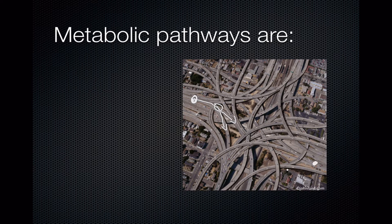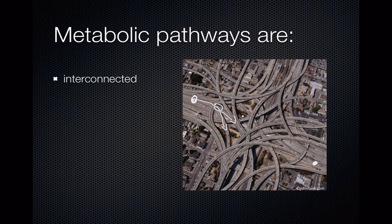That's an important idea here because energy cannot be created or destroyed. It doesn't disappear and it doesn't appear from nothing. So metabolic pathways are basically ways of tracing energy as it moves through living systems, the chemistry of living systems. Metabolic pathways are interconnected, which means they don't exist in isolation from each other, just like roads are pretty useless if they don't go anywhere or come from anywhere.